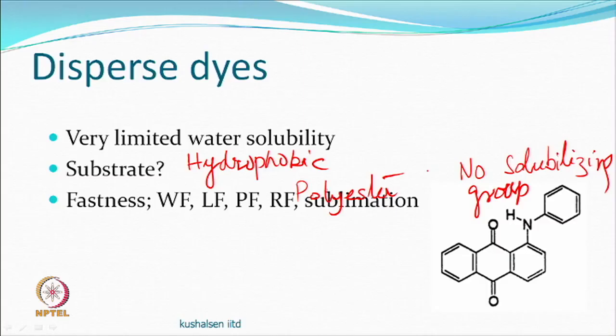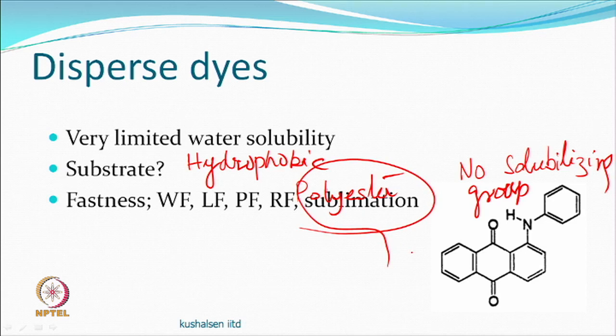For disperse dyes on polyester, wash fastness should not be a problem; light fastness depends on molecular structure. Perspiration fastness has minimal effect, and rubbing is not an issue unless particulate matter deposits on the surface, which requires post-treatment to remove. However, disperse dyes have a unique problem not shared by other dye classes: sublimation. These dyes can sublime if temperatures are suitable, causing shade changes or dye migration to unintended areas.